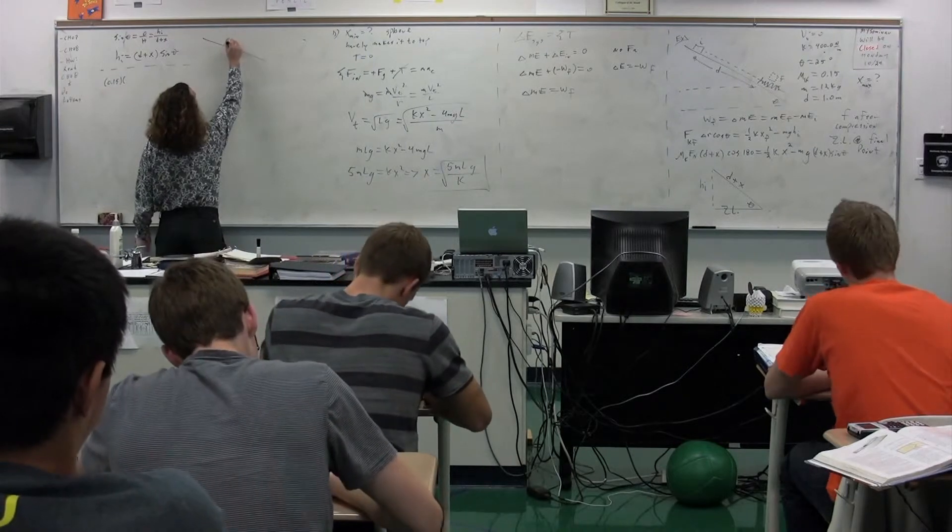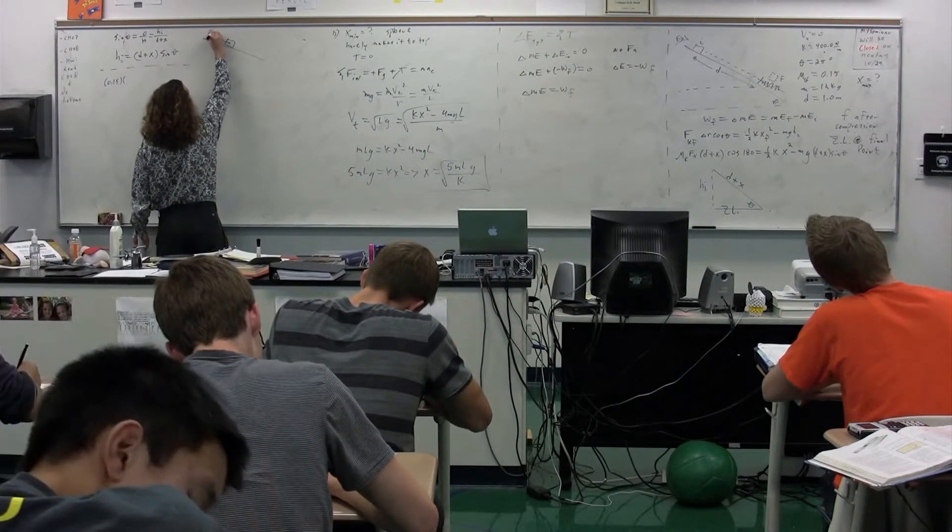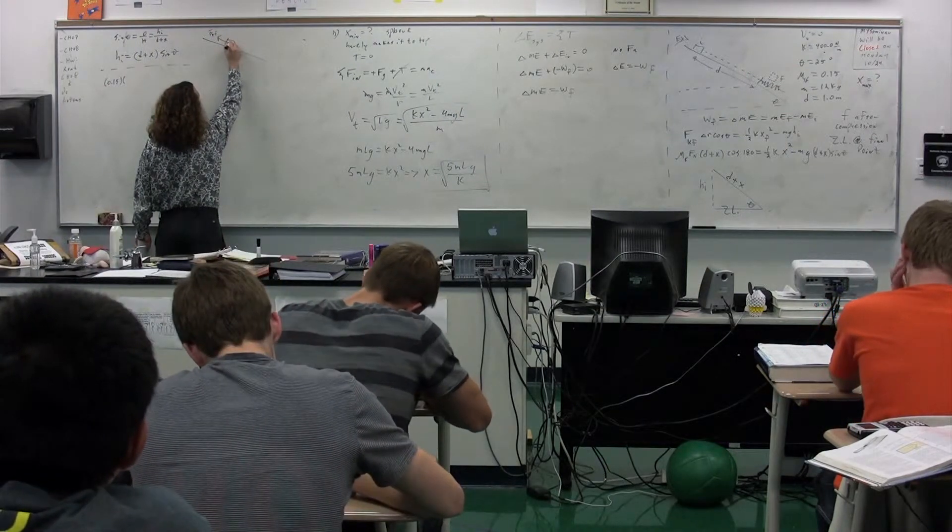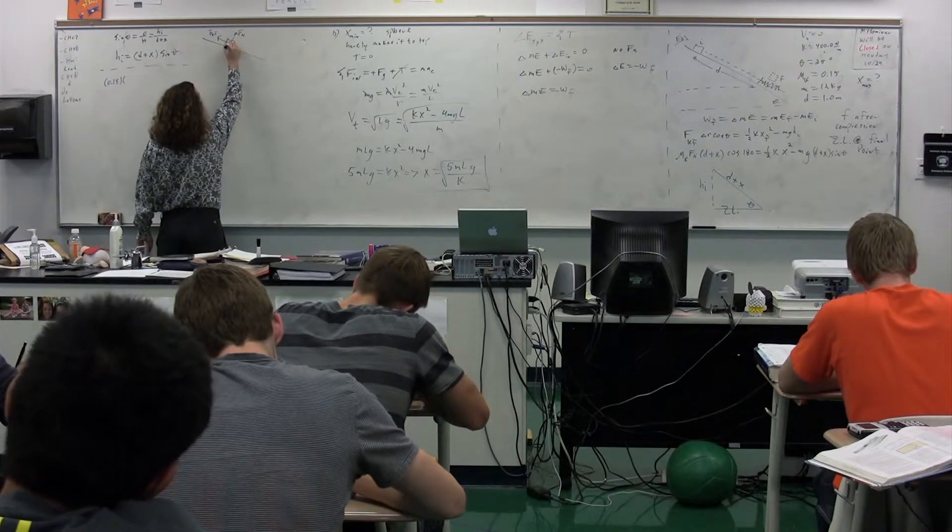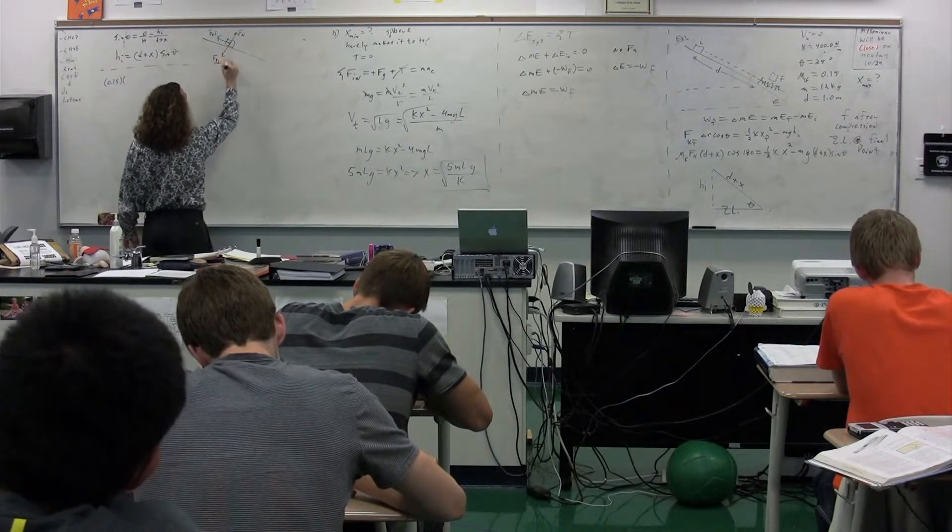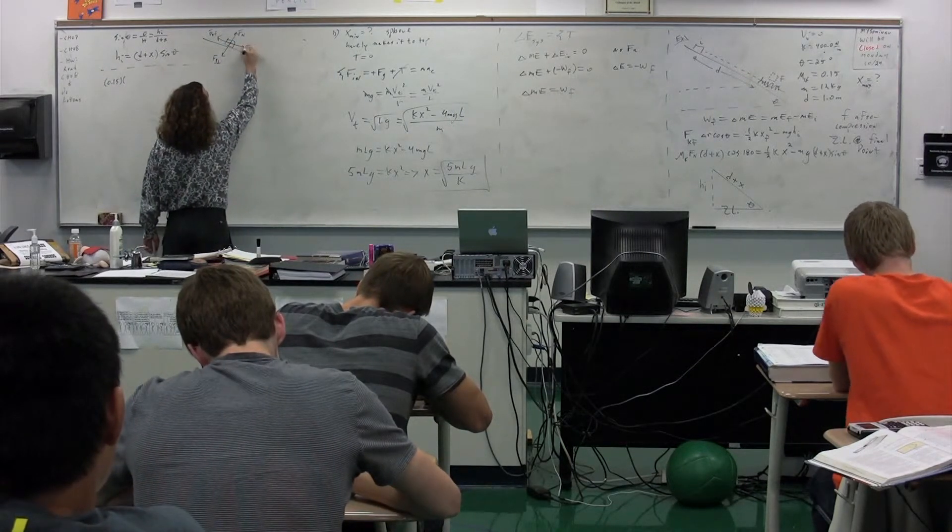So going up the incline parallel to it is the force of kinetic friction. Going perpendicular to it upwards is force normal. Perpendicular downwards is the force of gravity perpendicular. And then parallel to it going down the incline is force of gravity parallel. Force of gravity parallel.